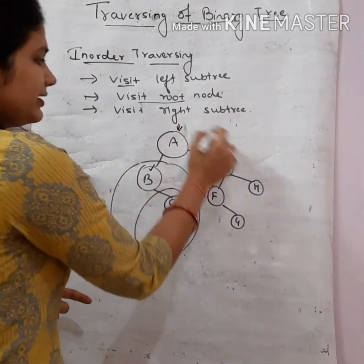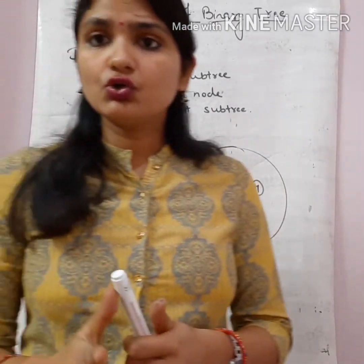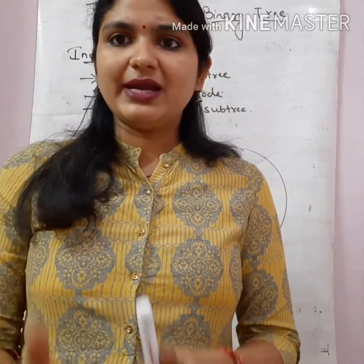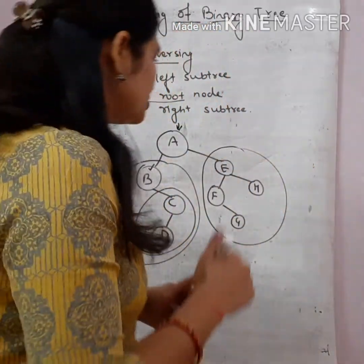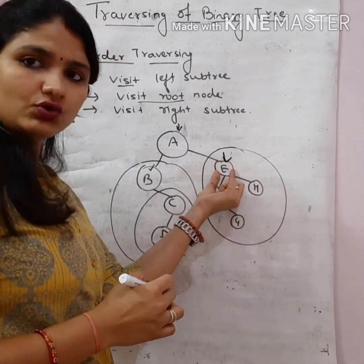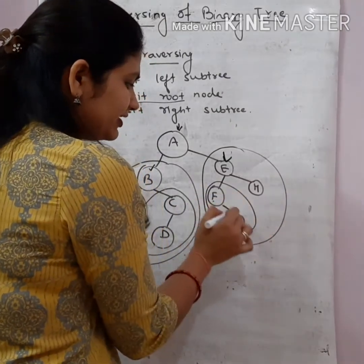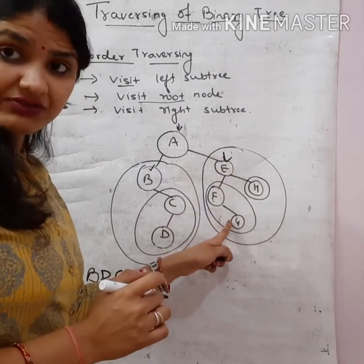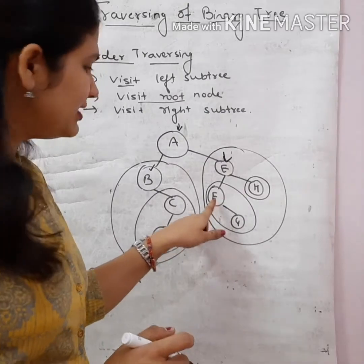After visiting root A, we visit the right subtree. In the right subtree we again have a root node, left subtree, and right subtree, so we follow the same rules. E is the root node of the right subtree. E's left subtree contains two nodes: F and G. E's right subtree has a single node. So first we visit E's left subtree.